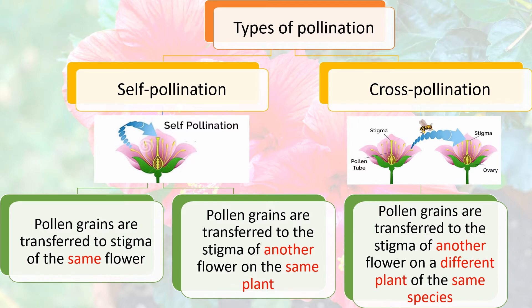Self-pollination occurs when pollen grains are transferred to the stigma of the same flower, or when pollen grains are transferred to the stigma of another flower on the same plant. Cross-pollination occurs when pollen grains are transferred to the stigma of another flower on a different plant of the same species.